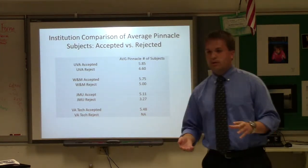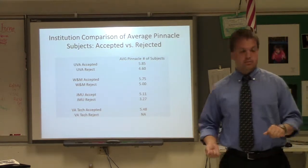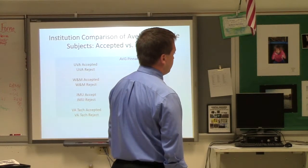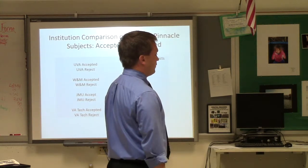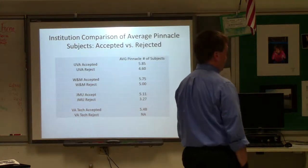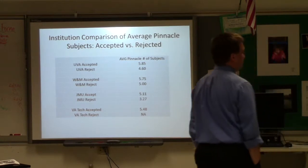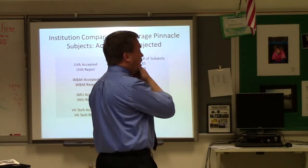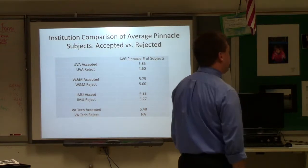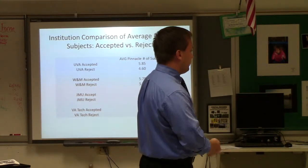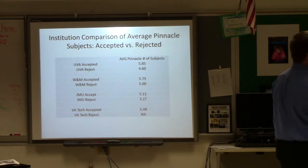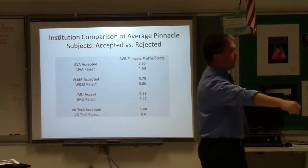To clarify: when we say averages of 5.85, these kids took roughly six AP or pinnacle-level classes and passed them — potentially seven or eight, but the average was about six. AP exam scores were not factored in — they're not reported until well into the summer and most schools don't use exam scores for admissions decisions; they matter for course credit once you get to university.